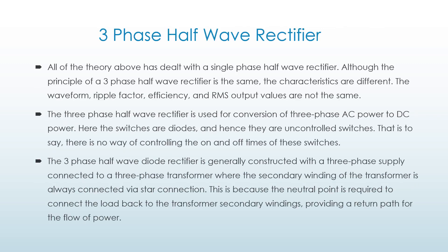3-phase half wave rectifiers. All of the theory above has dealt with a single-phase half wave rectifier. Although the principle of a 3-phase half wave rectifier is the same, the characteristics are different. The waveform, ripple factor, efficiency, and RMS output values are not the same.